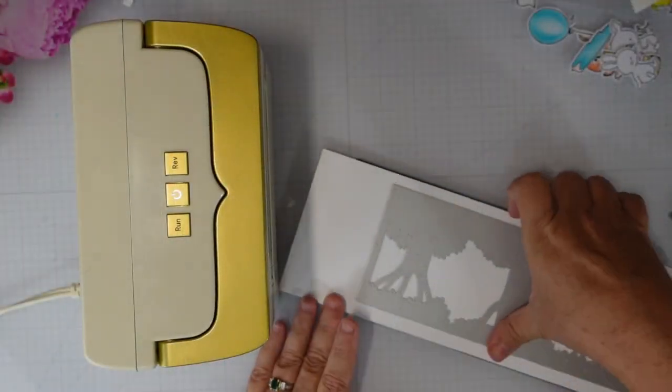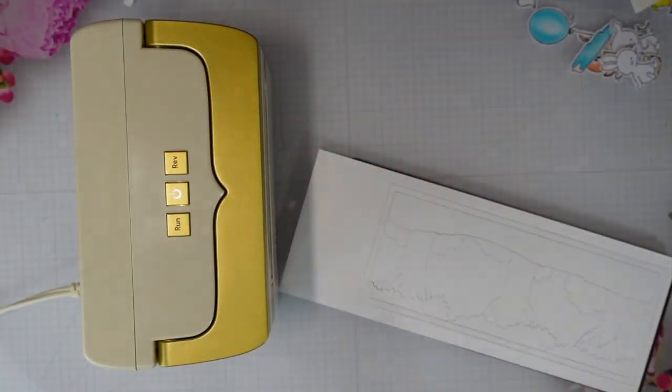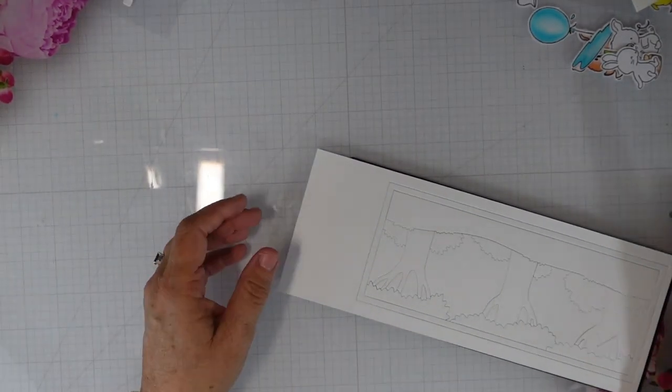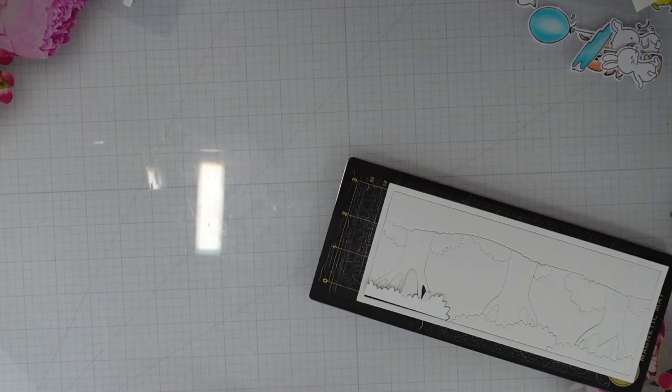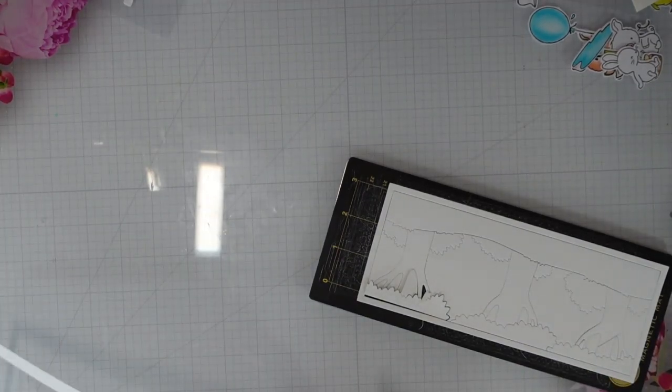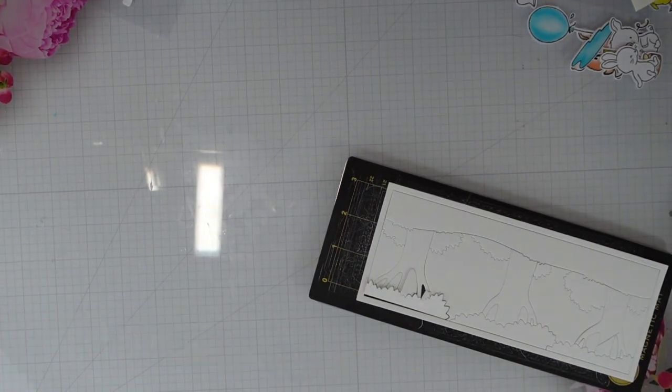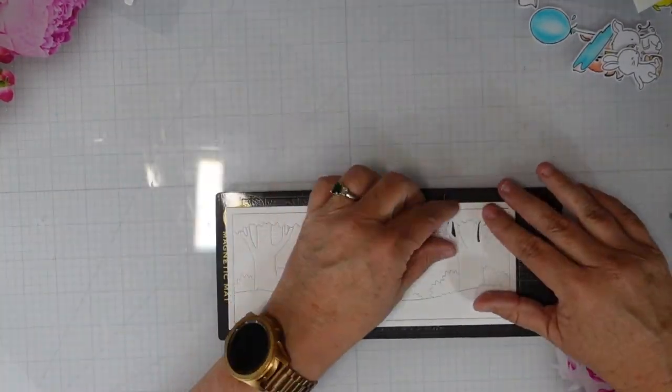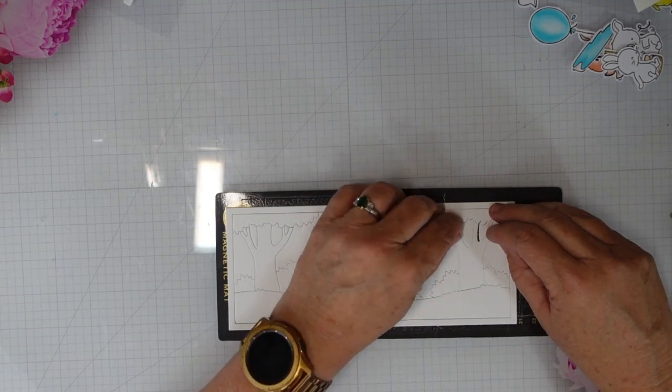I start out by obviously die cutting them using my die cutting machine. I try to keep all of the pieces together. Now they do end up falling apart, you can see it's like a puzzle. There are a lot of intricate little pieces in these die sets.